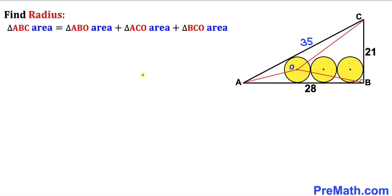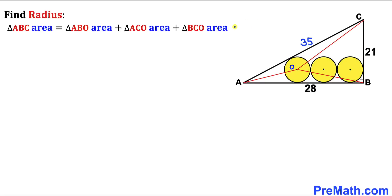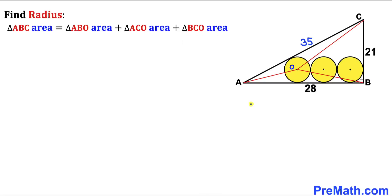Here's our key observation: the area of triangle ABC equals the area of triangle ABO plus the area of triangle ACO plus the area of triangle BCO. Our task is now to find each of these individual areas.